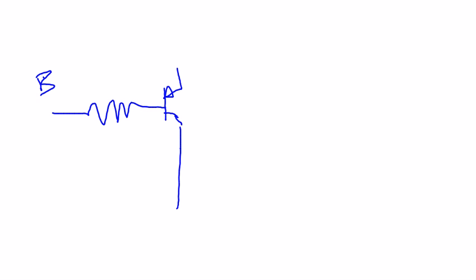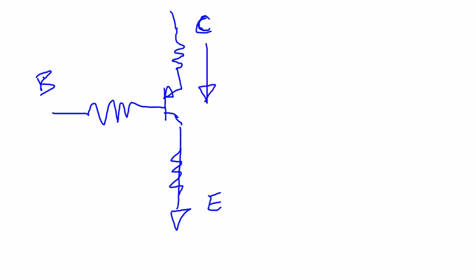So a transistor is very similar. We have an input, we call our base, and our output we call an emitter, and the large current is going to come through a collector. So what this does is the base — if we have a large current that we want to control to switch on and off — we can control that with a small current through the base.